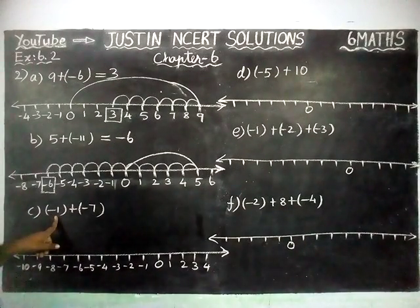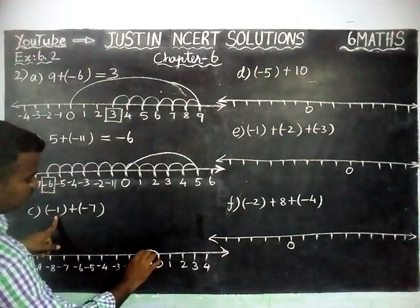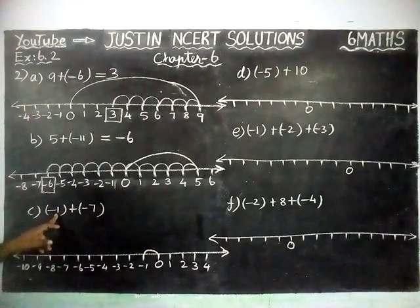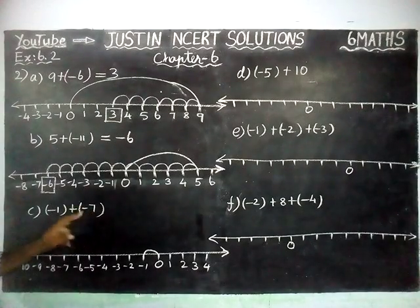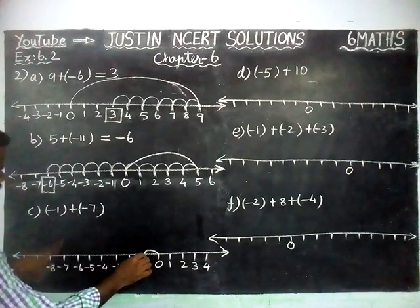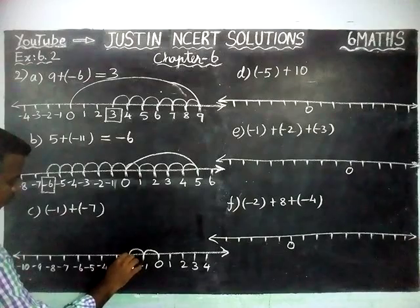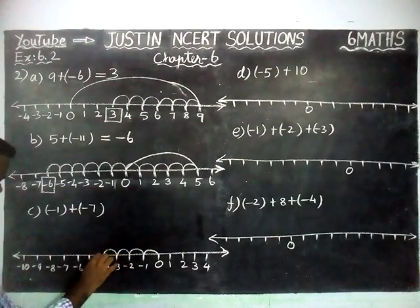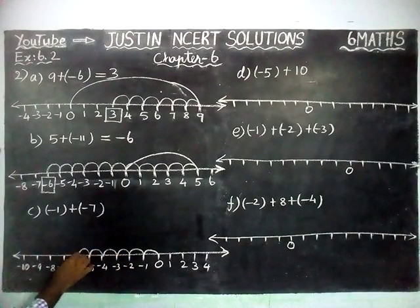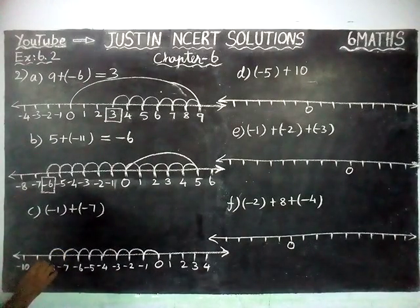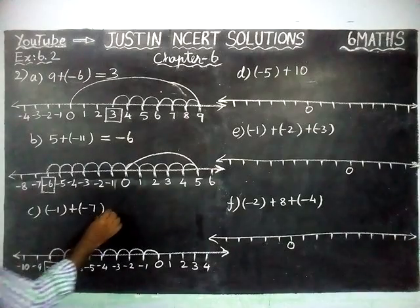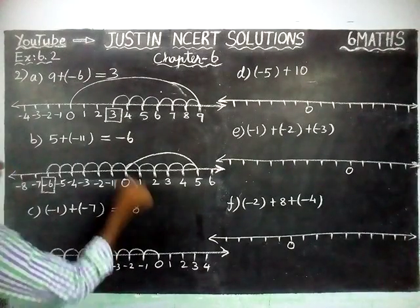The first number is minus 1, so from 0 we move to minus 1. Then from here, minus 7 — again a minus number — so we have to move left-hand side, jumping 7 steps: 1, 2, 3, 4, 5, 6, 7. In the 7th jump, we reached the number minus 8. So the answer is minus 8.